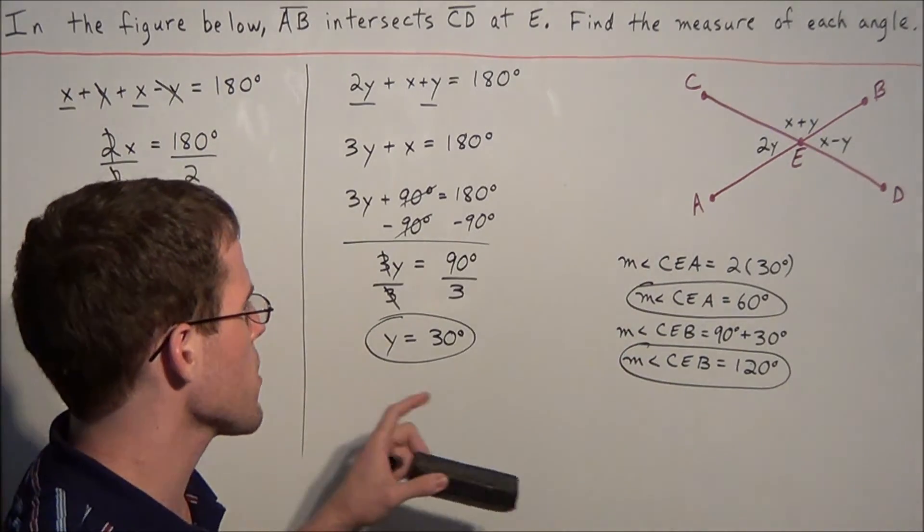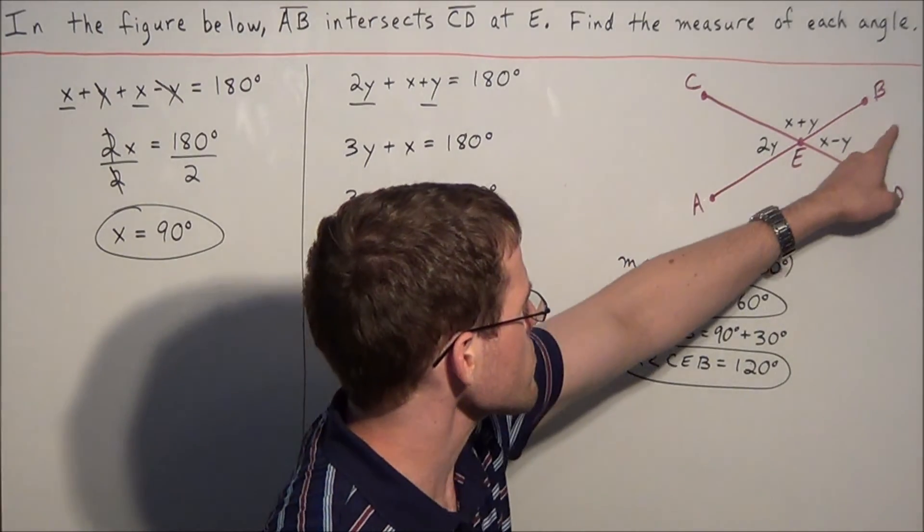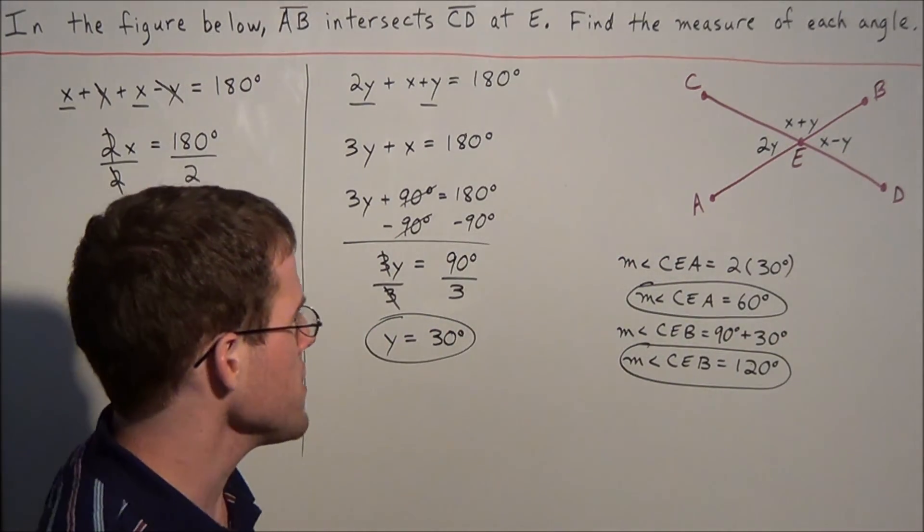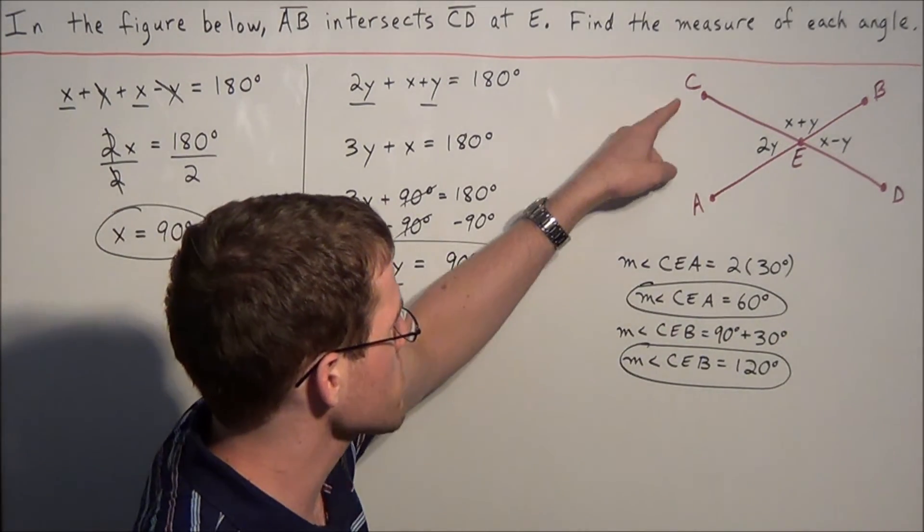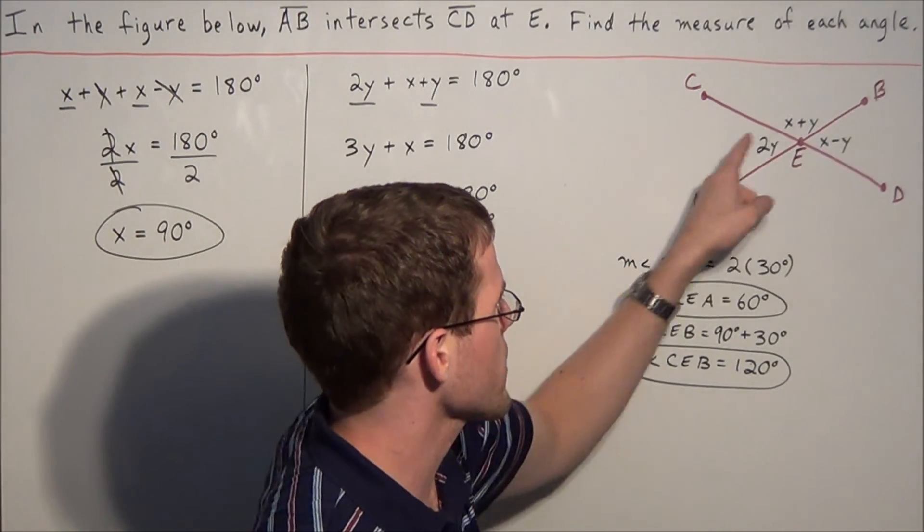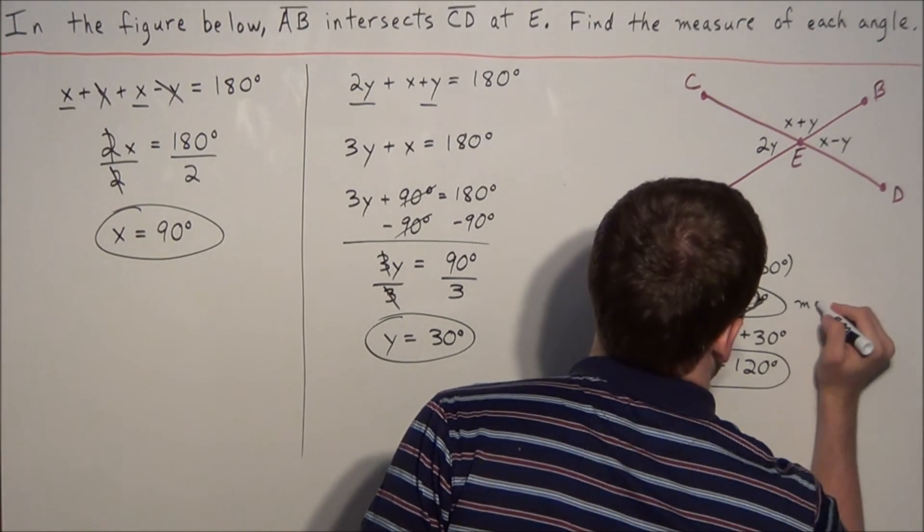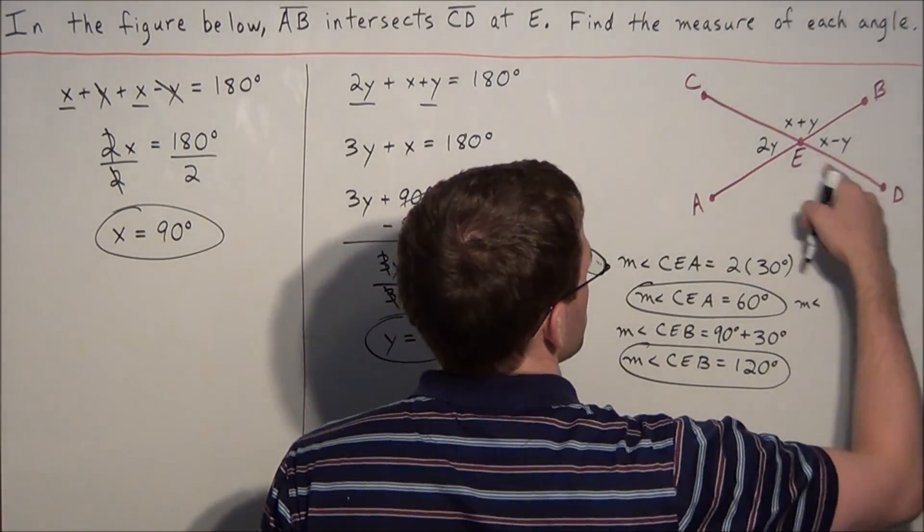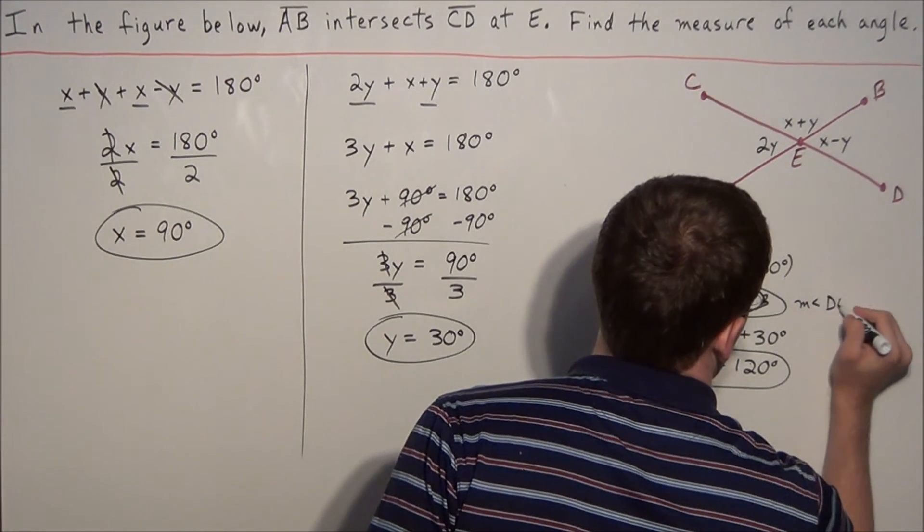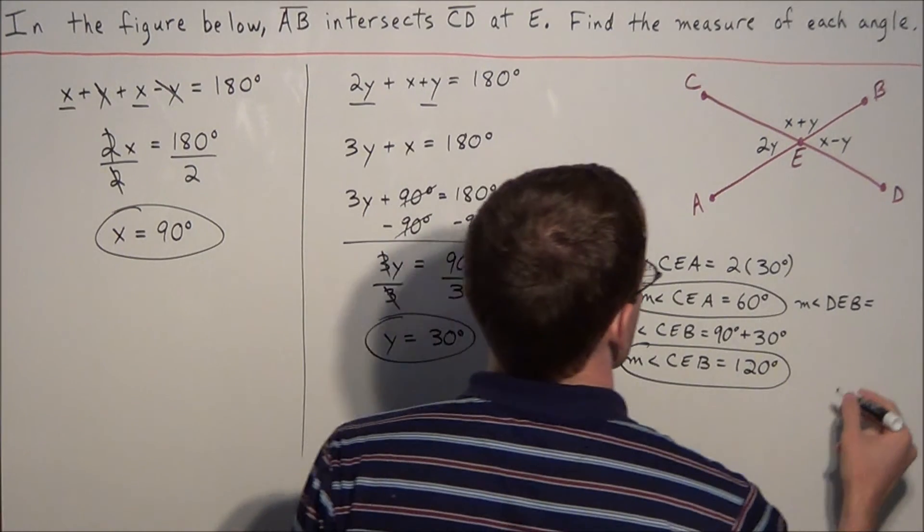At this point we could plug in for X and Y to find the value of angle DEB, or we could just notice that angle CEA and angle DEB are vertical angles, therefore they are equal. So the measure of angle DEB equals 60 degrees.